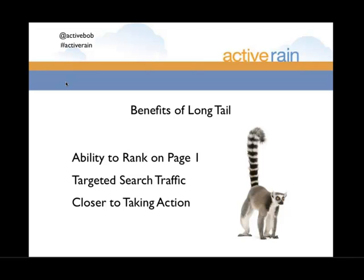Another benefit of the long tail is targeted search traffic. Our blog posts will be found by people doing very specific and targeted searches. That targeted traffic is a benefit because it means we get in front of people who are closer to taking action. The person who types 'homes for sale in Seattle' is less likely to take immediate action than someone who types 'homes for sale in Seattle with a three-car garage' or 'condos for sale on Capitol Hill near Amazon.'